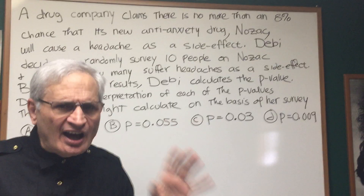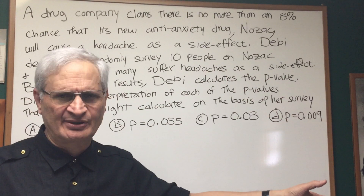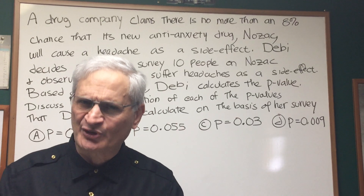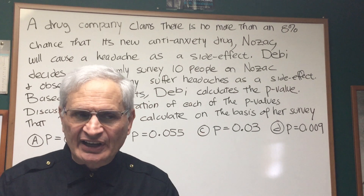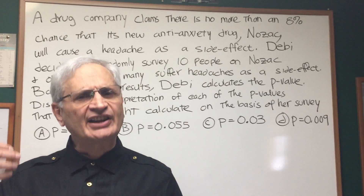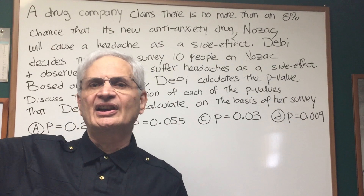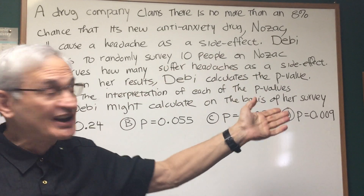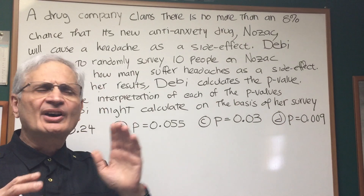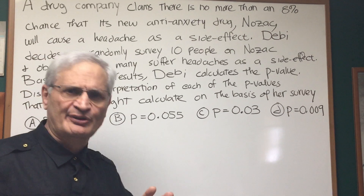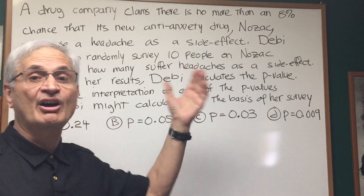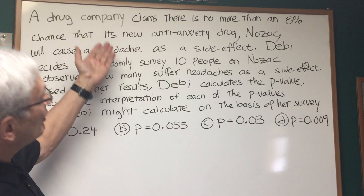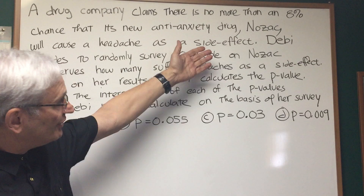How the p-value is calculated is not of our concern — that involves a whole lesson in probability. But here we have a discussion of a p-value. I'm not going to give you the formal definition, but I'm going to give you an intuitive definition of what the p-value represents. It is the probability that your observed value in the survey is a confirmation of the value claimed — in this case, the drug company claiming that no more than 8% of their Nozac takers will have a side effect of a headache. The p-value is the probability that Debbie's survey is a confirmation of the drug company's claim, and the drug company's claim will be regarded as the null hypothesis.